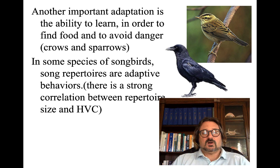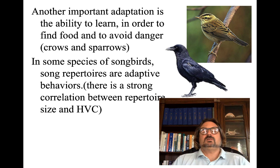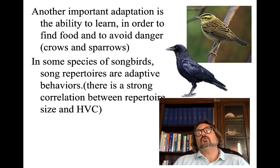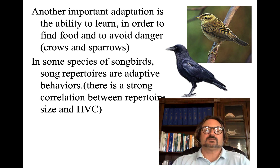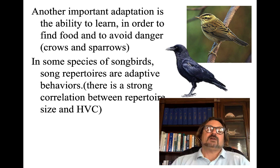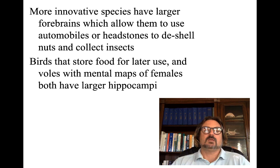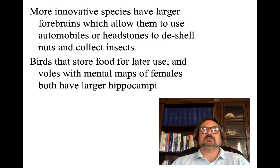In some species of songbirds, song repertoires are adaptive behaviors — similar to how variety is appealing in human courtship. If songbirds can learn more repertoires of songs, they're more attractive to potential partners. Those with larger song repertoires have a larger higher vocal center, akin to our Broca's area. More innovative species have larger forebrains, allowing them to utilize automobiles or headstones to de-shell nuts, drop nuts on roads for cars to break apart.